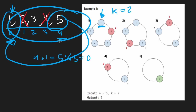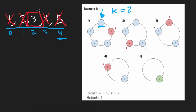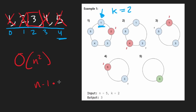I'm not going to code this solution up because there is a better way. This array simulation is clearly an O(n²) solution — we're going to do n minus one eliminations, and each elimination could take O(n) time due to removing from the middle of the array. Space complexity is O(n).